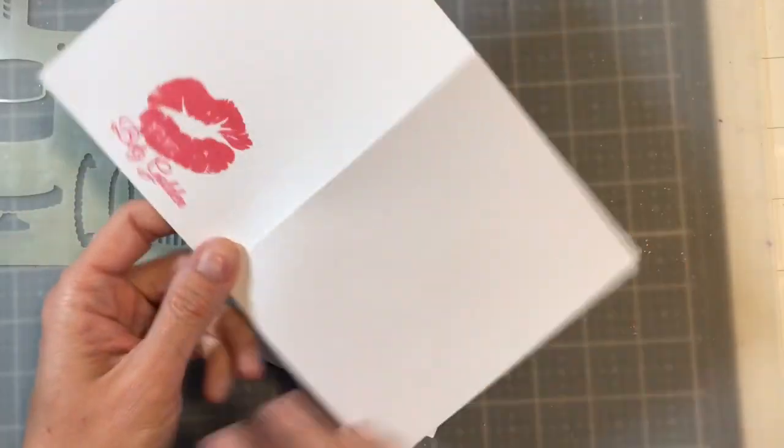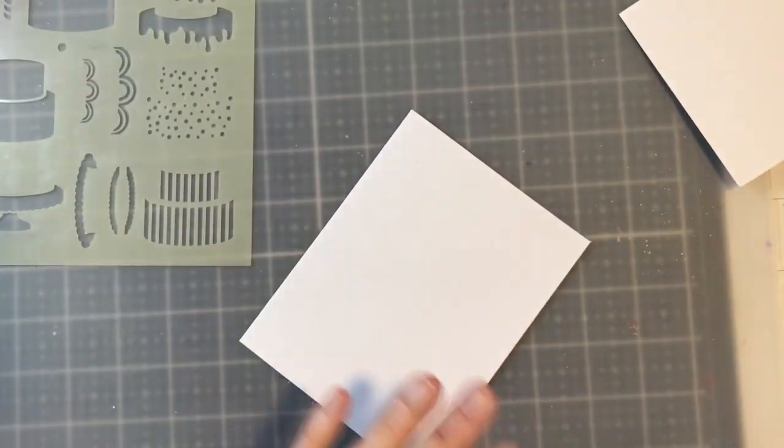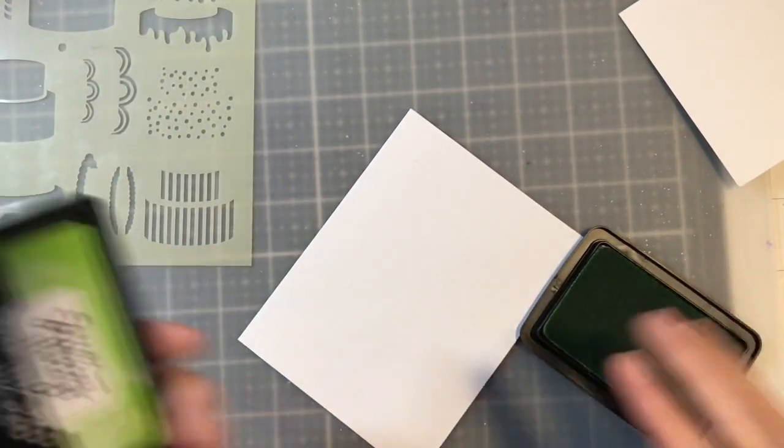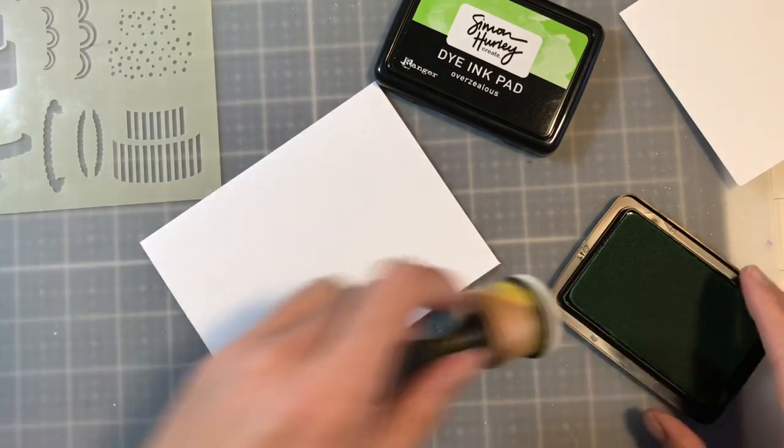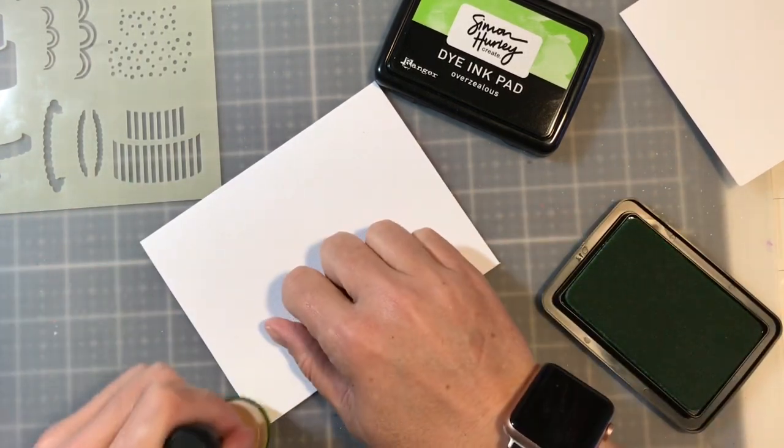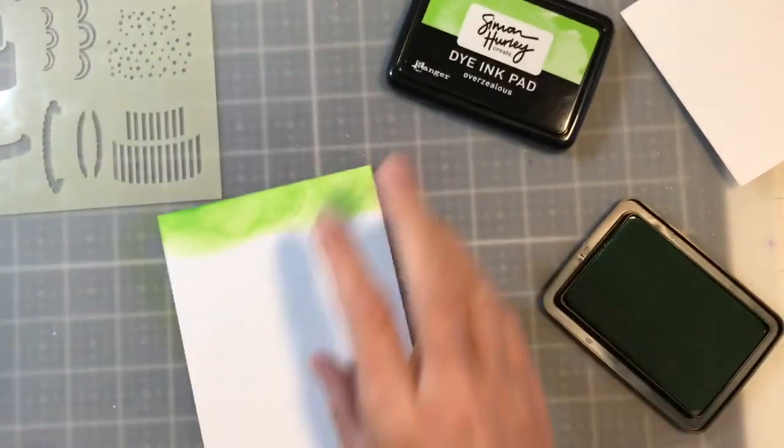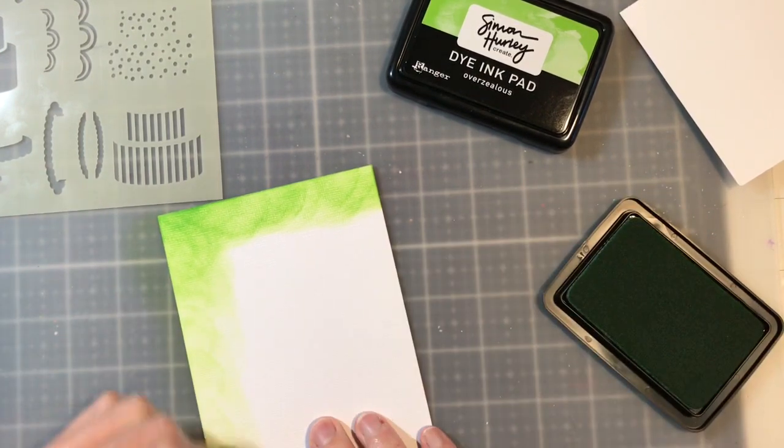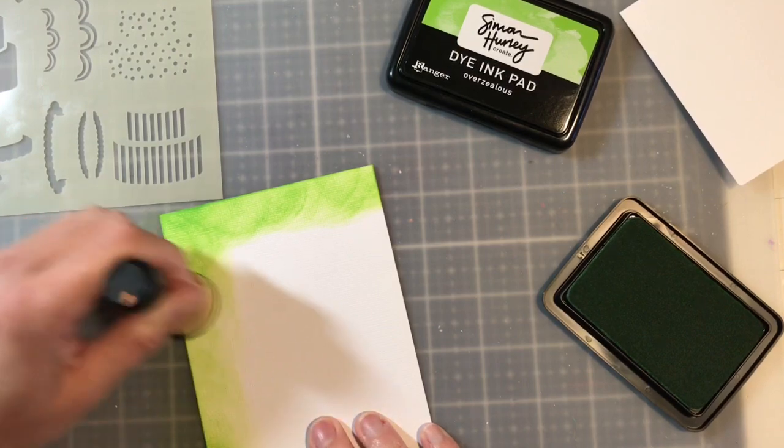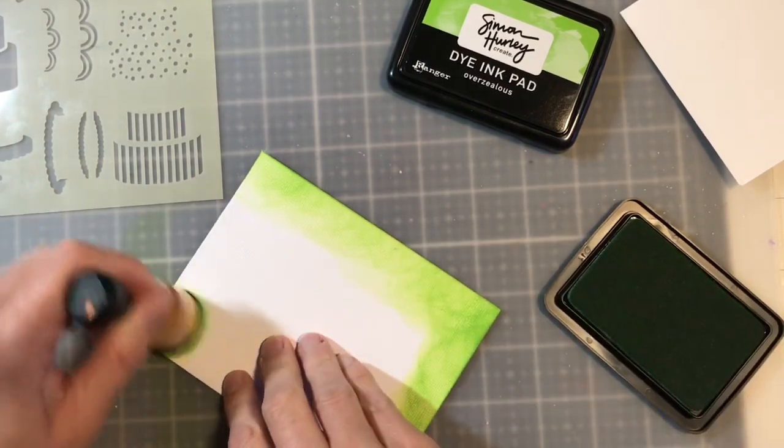So I took white textured cardstock, it was 8 1/2 by 11, cut it down the middle, scored it, boom, now we have a card base. We are going to go ahead and just get this ready. So I am going to take some overzealous dye ink and we are just going to ink up the edges where we are going to put our card front. And our card front is 4 x 5 1/4 and it is just Neenah flat white cardstock. Really great stuff.